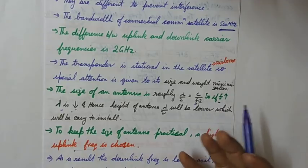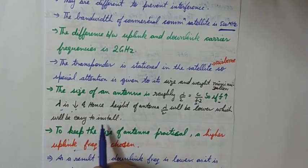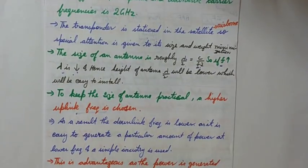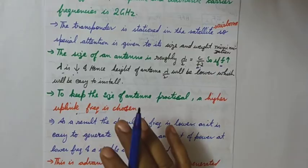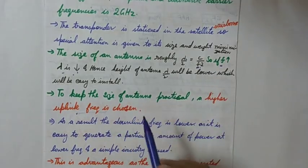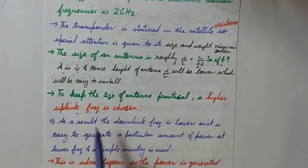So for a higher frequency, the height of the antenna will be lower. So if we take higher uplink frequency, the receiving antenna in the transponder will be low, it will be small in size. If size is small then naturally the weight will be less and this will be easy to install. So for this reason the uplink frequency is kept at a higher end.